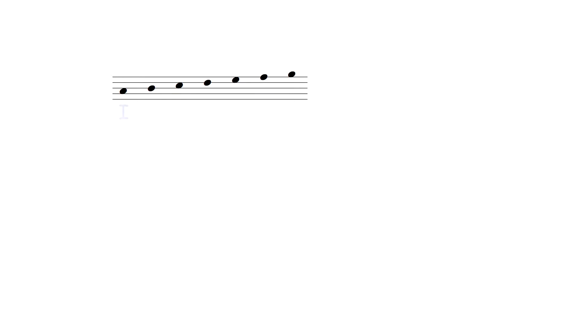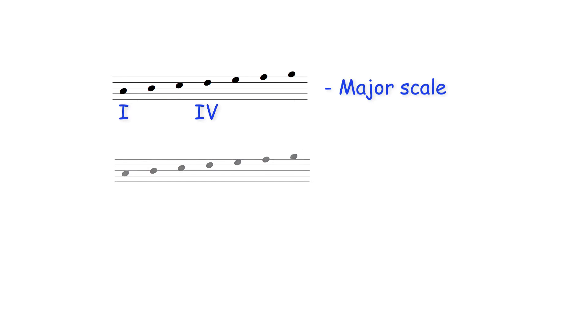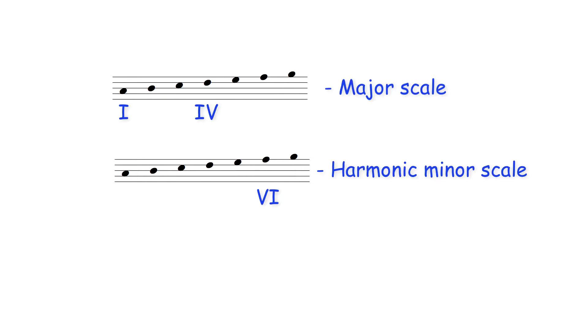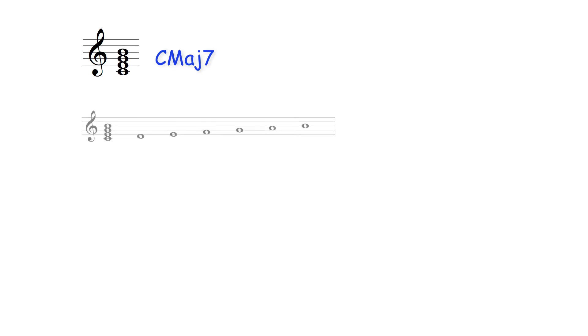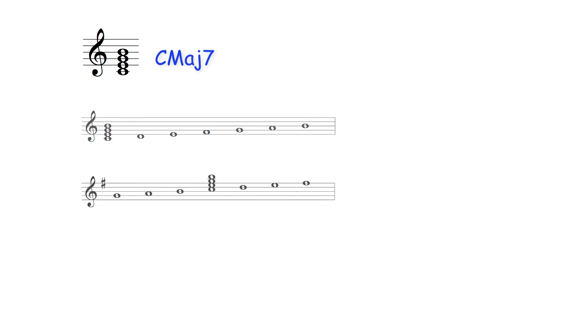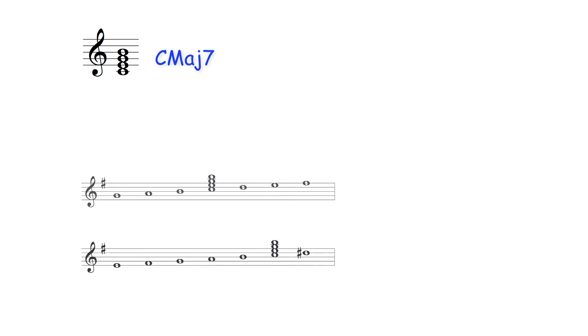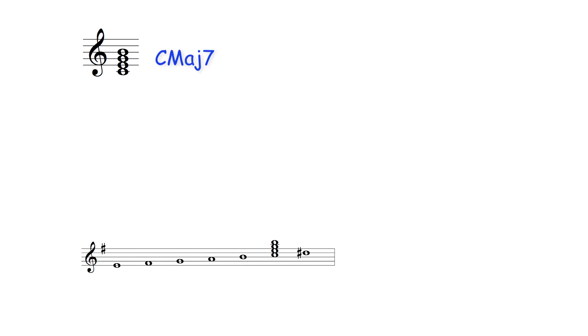Major 7th chords occur on the tonic and subdominant of a harmonized major scale, and on the submediant of a harmonized harmonic minor scale. A C major 7th chord therefore can be chord I in C major, chord IV in G major, and chord VI in the E harmonic minor scale.